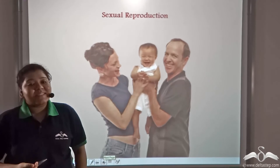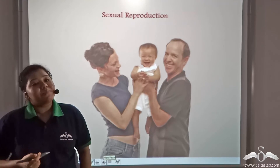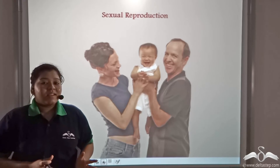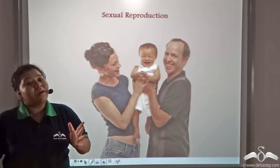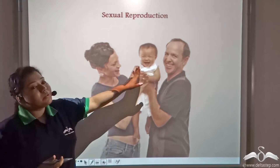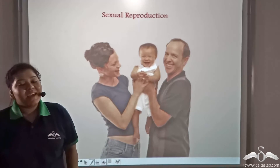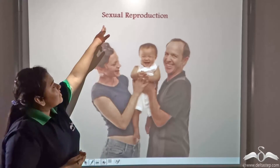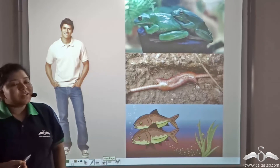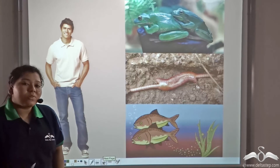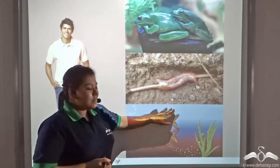For so long we have been discussing asexual reproduction — reproduction that does not require the presence of both sexes. But in the case of human beings, we require a male and a female to come together to give birth to a new life. This form of reproduction caused by the fusion of the male and the female gamete is known as sexual reproduction. Sexual reproduction is also seen in other organisms such as frogs, earthworms, and fishes.